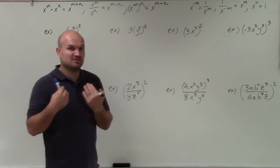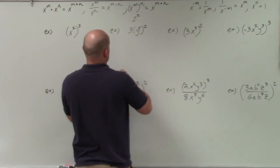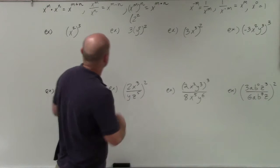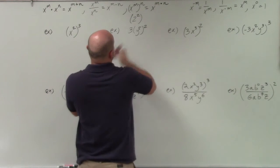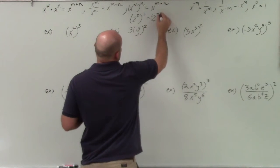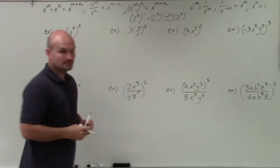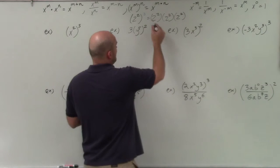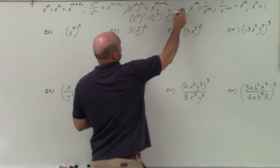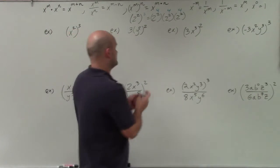Let's keep our numbers simple to make sense of this. If I had 2 squared and that was raised to the third power, what that in reality means is I have 2 squared times 2 squared times 2 squared. What's 2 squared? That's 4. So what's 4 times 4 times 4? Well, 4 times 4 is 16, times 4 is equal to 64.